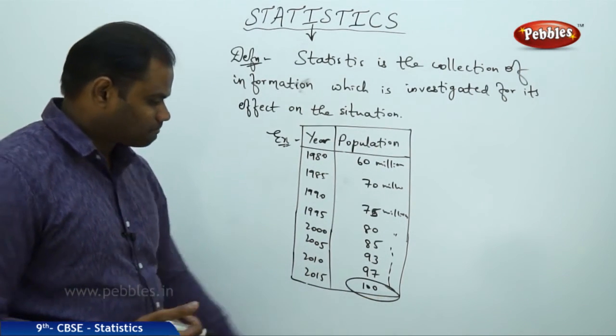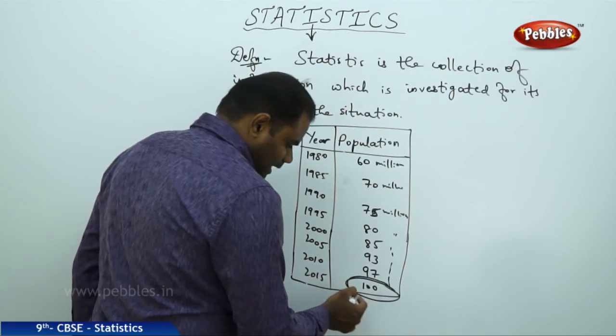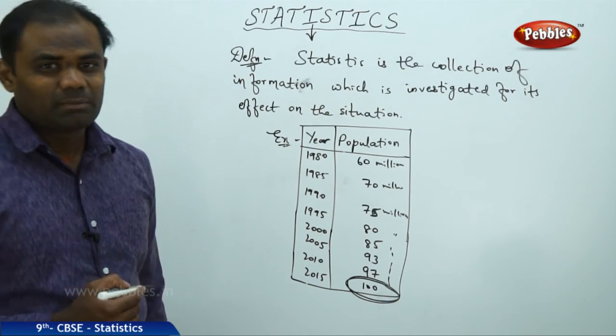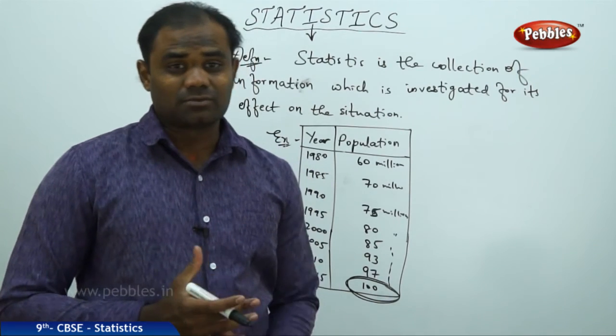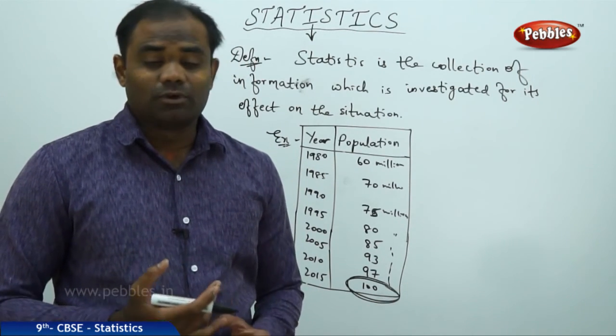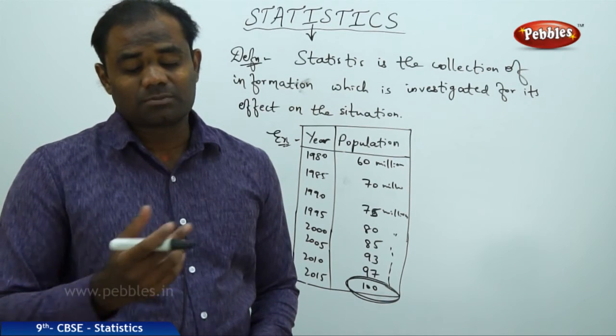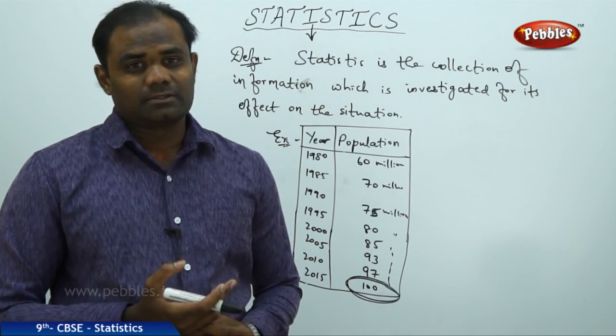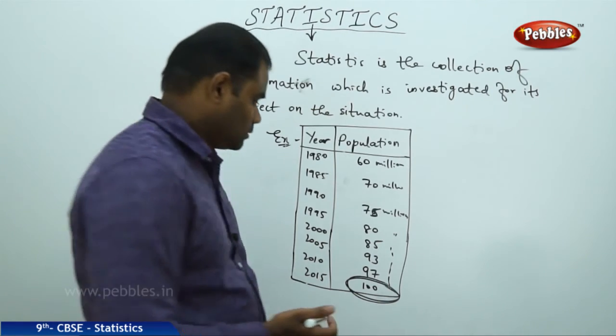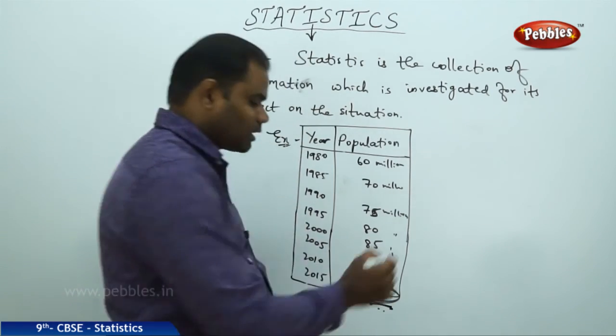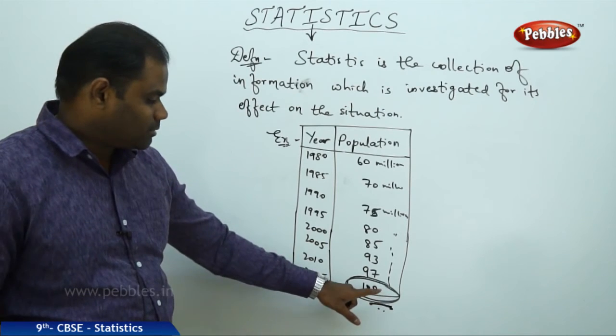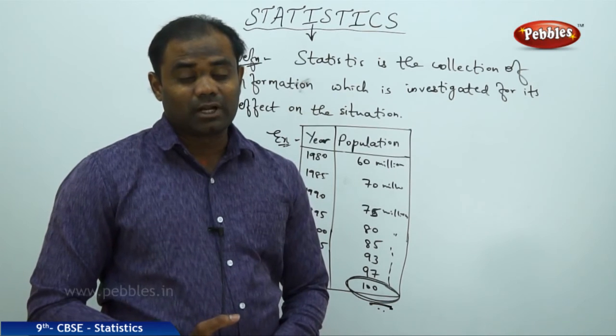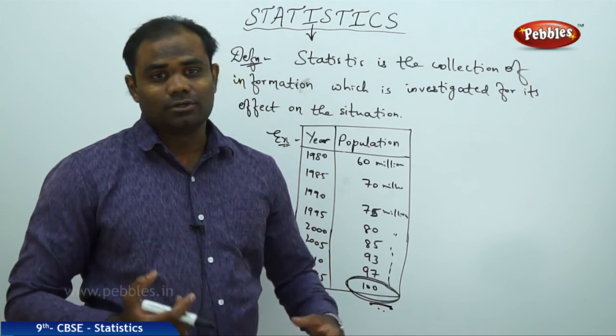This table shows this has a serious effect on the situation because if the population of the country increases very much, there will be scarcity problems, food problems, housing problems, and many other problems which arise. Therefore, through statistics, I conclude that I need to take precautionary measures from the year 2015, when the population reaches 100 million.